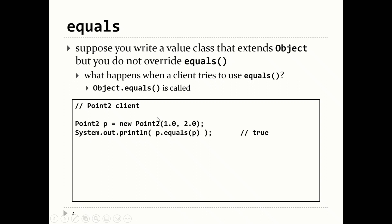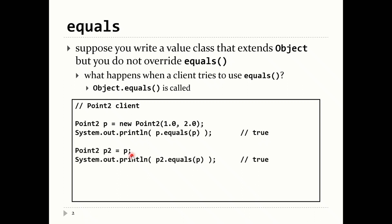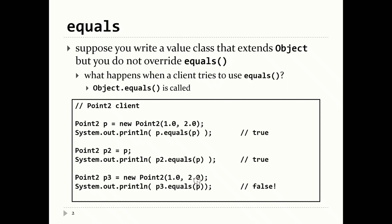Our Point2 class hasn't implemented equals yet, but you are allowed to use it because we get the implementation from Object. So if you have a point P at coordinates (1, 2) and ask does P equal P, it had better be true — it's the same object. If you write Point p2 = p and ask is p2 equal to p, you also get true. But if you make a new object with coordinates also (1, 2) and ask is this new object equal to p, the answer will be false. Even though these two points have the same coordinates, as far as equals is concerned, they're not equal.